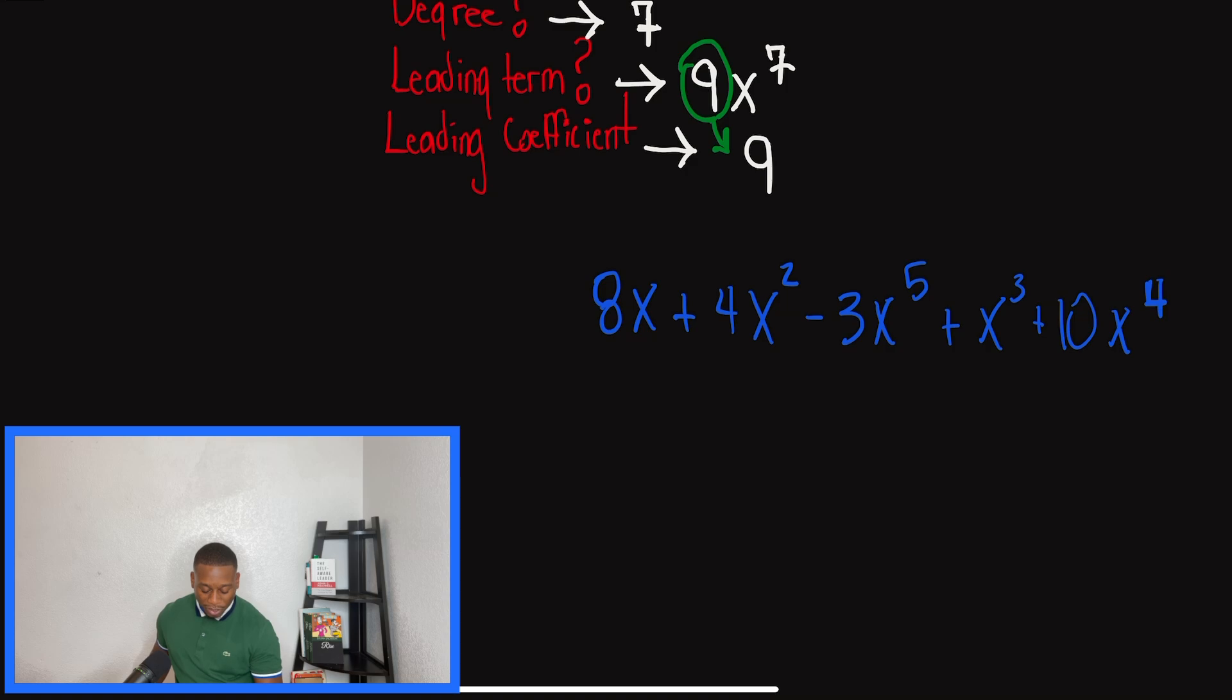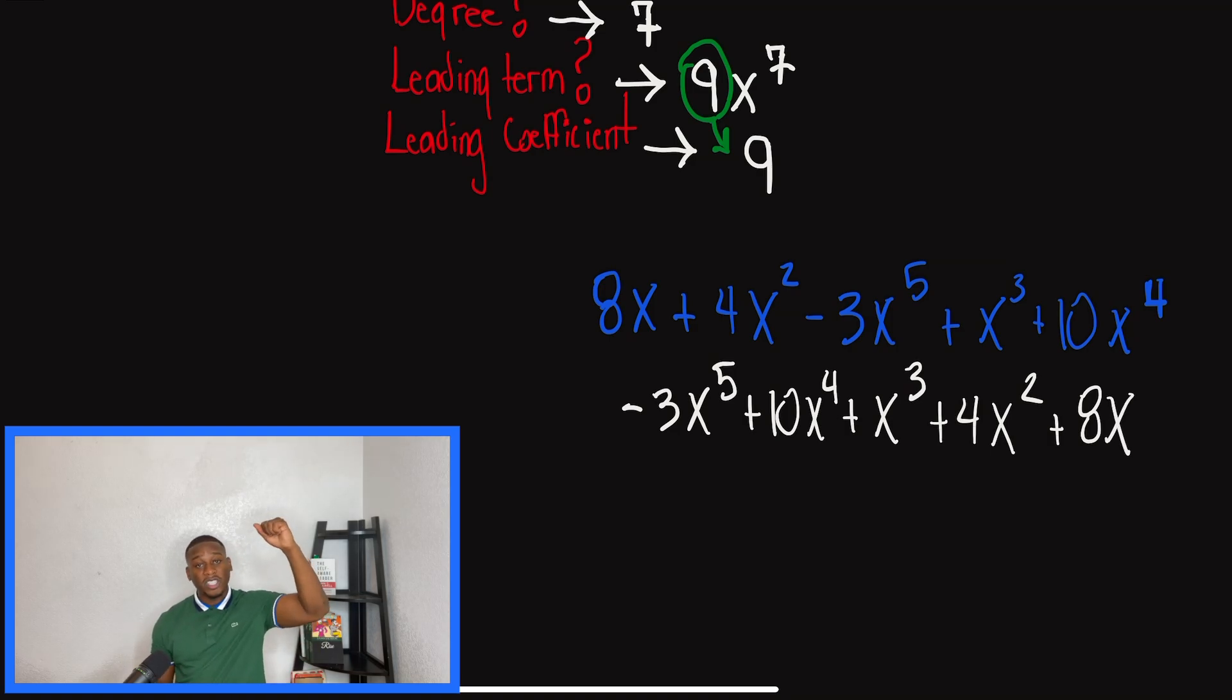So we're just going to go through these real quick. So it asks us to write the polynomial in standard form. So standard form, like we said earlier, was what? Greatest to least by exponents. So that means negative 3x to the fifth goes first, then 10x to the fourth, followed by x to the third, then 4x squared and 8x. And if we look at our exponents, they started from the largest and they're going in order down to the smallest. So boom, standard form is good.